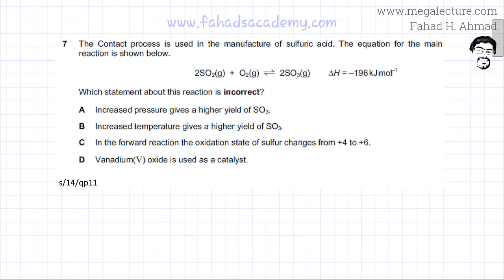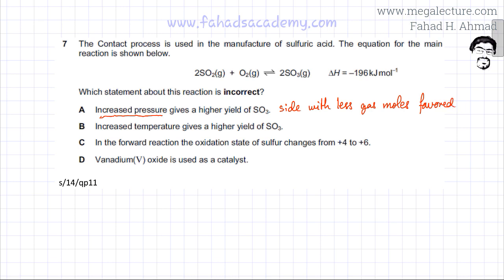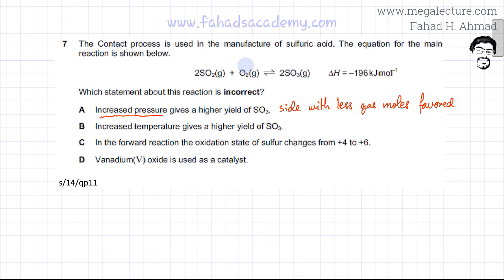The first statement reads that increased pressure gives a higher yield of SO3. If you increase pressure, the side with fewer gas moles is favored, because increasing pressure compresses the system and less gas would be produced. On the left side there are three molecules — two of SO2 and one of O2 — and on the right side there are two molecules of SO3. So the fewer gas moles side is the forward side, meaning increased pressure gives a higher yield of SO3. The first statement is correct.